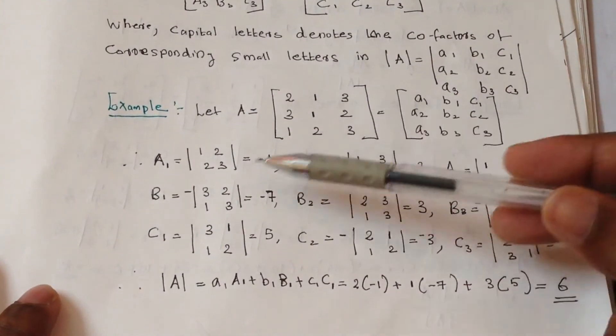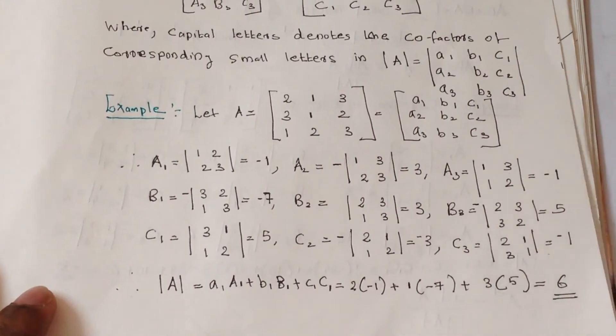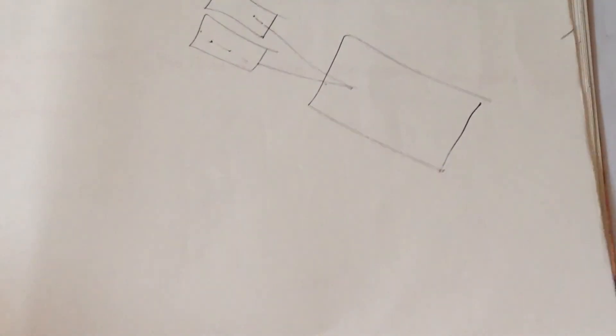Till here, what we have done: we have taken the matrix, found the cofactors of the matrix, and then found the determinant of the matrix. We got a value of 6.